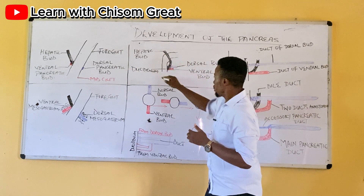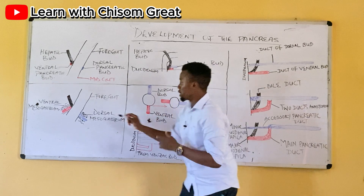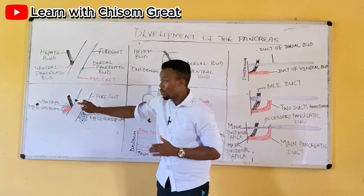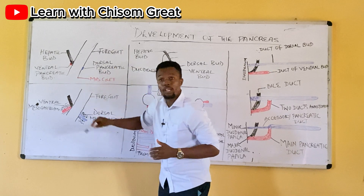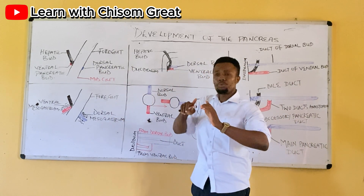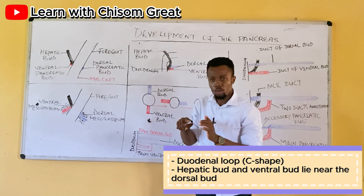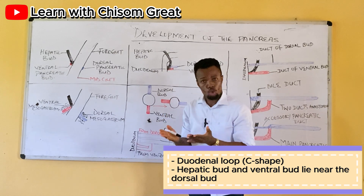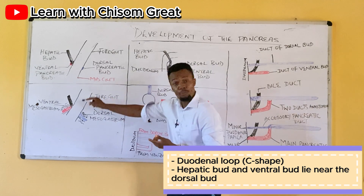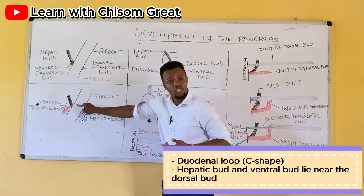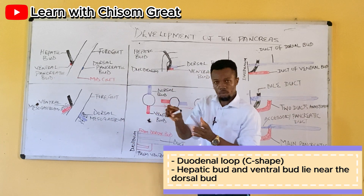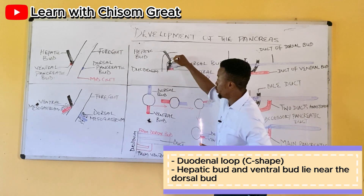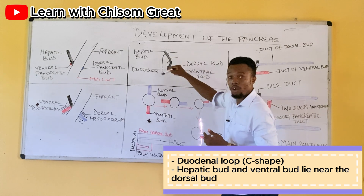This part of the foregut gave rise to the duodenum — specifically the second part of the duodenum. Because of the looping of the duodenum, which develops and curves to the right, both the hepatic bud and the ventral bud come to lie around the dorsal bud.